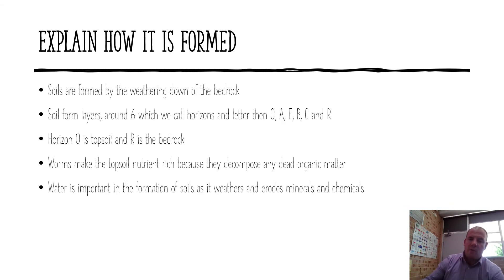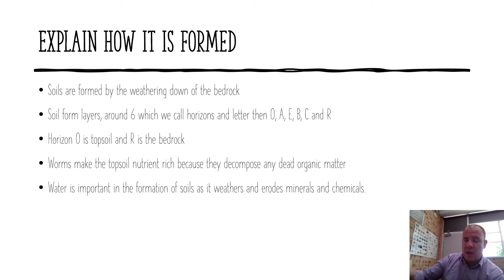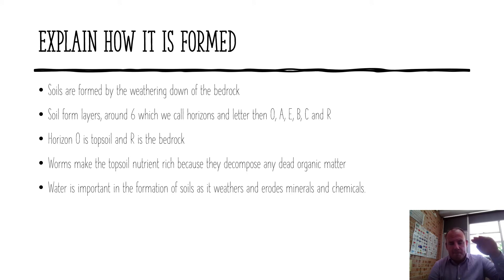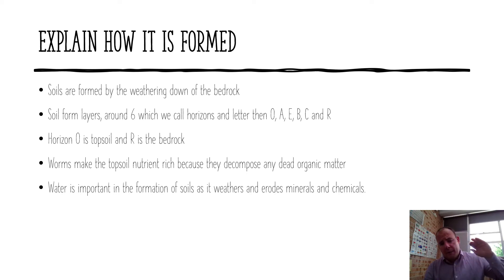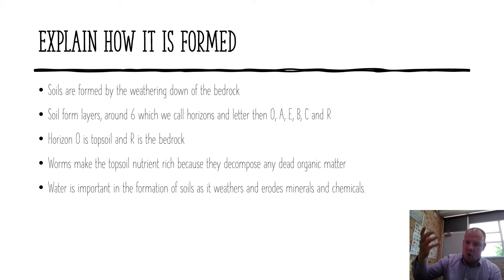Soil is formed by basically the weathering down of rock, and like I said, it takes a long period of time. It forms in layers, also called horizons, labelled O, A, E, B, and C, found in that order, with O being the top horizon — the topsoil — and the bottom layer or horizon being the bedrock. Worms in the topsoil are really important because they decompose dead organic matter and turn the topsoil into nutrient-rich soil. Water is also important because it helps break down minerals and chemicals in the soil. That's how good quality soils form — the weathering of bedrock, with worms and water being really important.